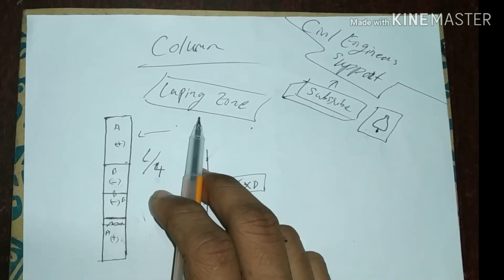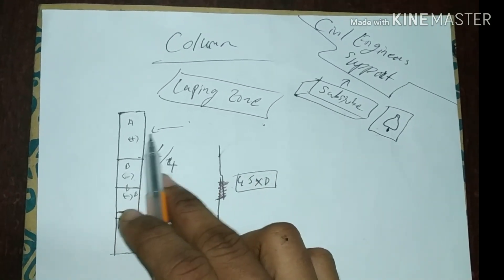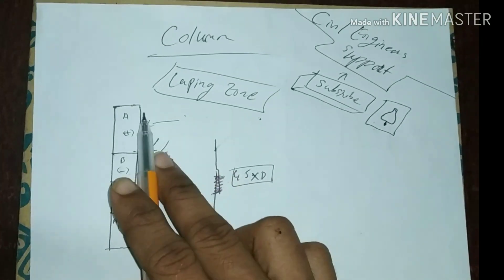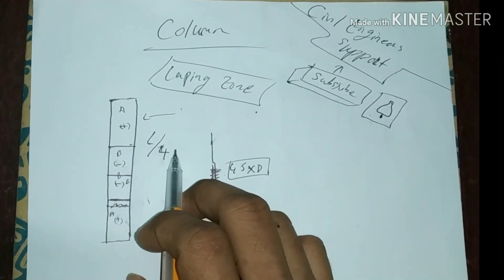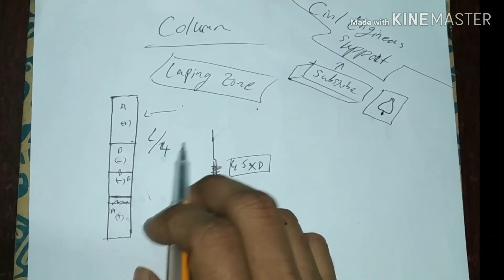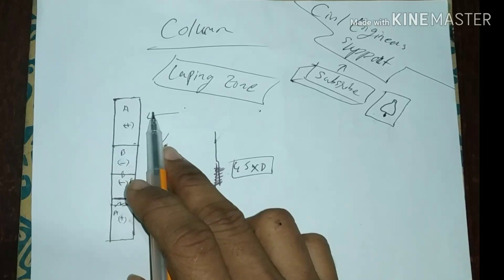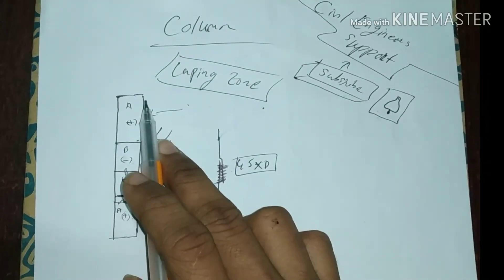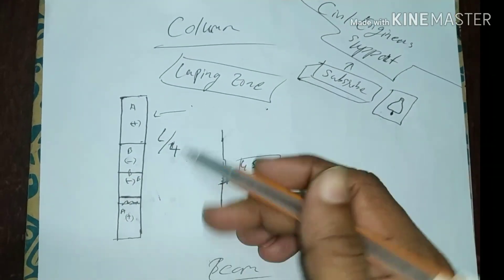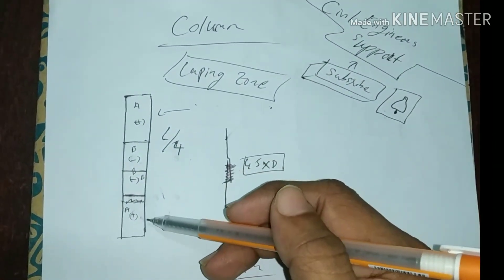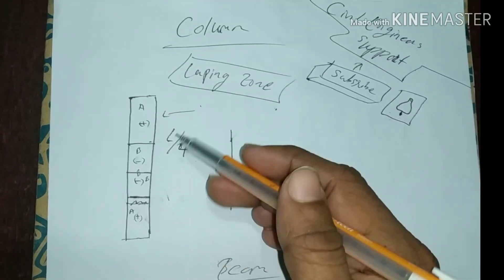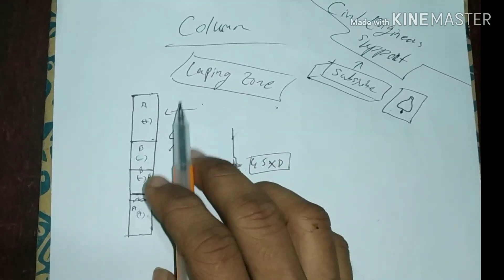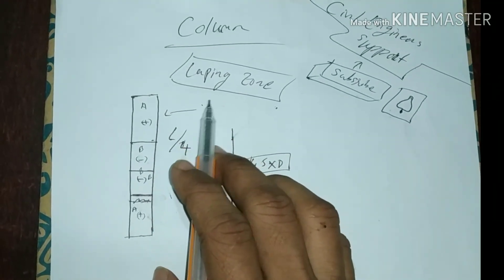First, I will show you the Column Positive Lapping Zone. It will be divided by 4, and if we move this to the right position, we will use a positive zone. Let's change to the left zone. Now let's talk about the Lapping.